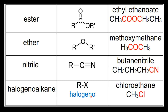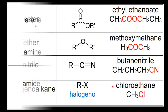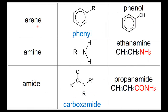Finally we have the halogenoalkanes — the functional group is halogeno and an example is chloroethane. The next example are the arenes, which have the phenyl functional group — an example is benzene. Moving on to the amines — this is the amine functional group and an example is ethanamine. Our last example are the amides — this is the carboxamide functional group and an example is propanamide.